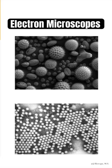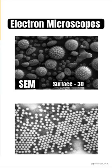Scanning electron microscopes, or SEMs, focus a beam of electrons onto the surface of a specimen to visualize it, and this provides images that look 3D.